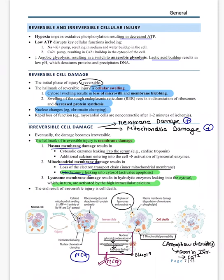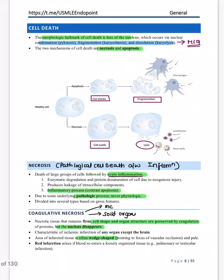In the nucleus during irreversible injury, three things occur — remember the sequence: pyknosis (condensation), karyorrhexis (fragmentation), then karyolysis (complete dissolution). Also in irreversible cell injury you see amorphous densities in mitochondria — made up of calcium — which is an important MCQ point.